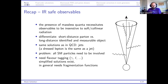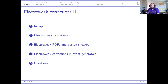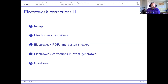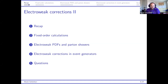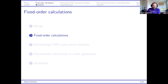Today I'll give an overview of what kind of impact the electroweak sector has on different classes of observables. We'll first look at fixed order calculations and what NLO electroweak corrections look like, then go into the resummation corner and look at electroweak PDFs and parton showers, and lastly discuss how to incorporate electroweak corrections into event generators.